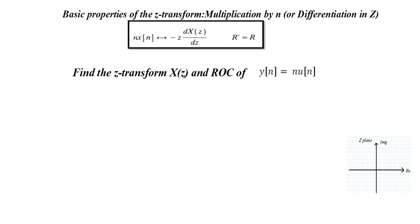Now we will see how we can apply this property in solving problems. Here is a basic question: we need to find the Z-transform and ROC of the signal n·u[n]. When you approach the direct method to solve this particular problem it is very difficult, so never use that method. Always use this differentiation property for such questions. We assume x[n] = u[n] as the basic signal.